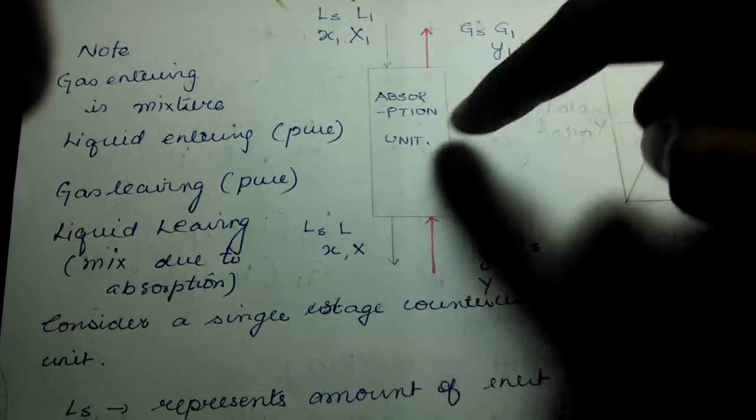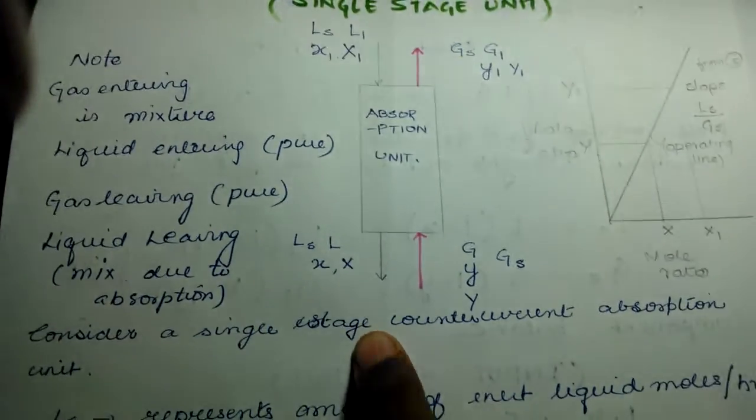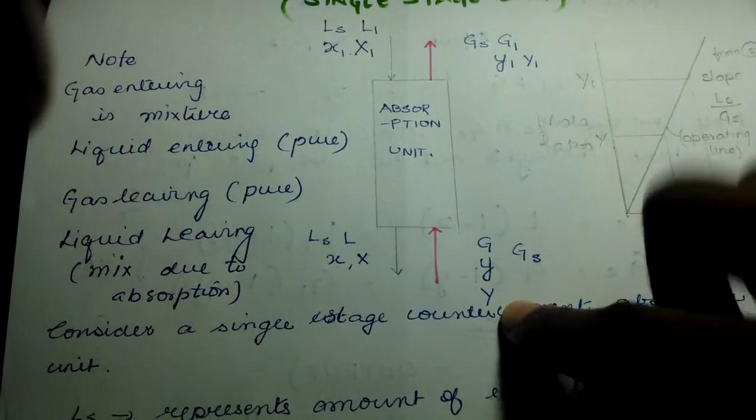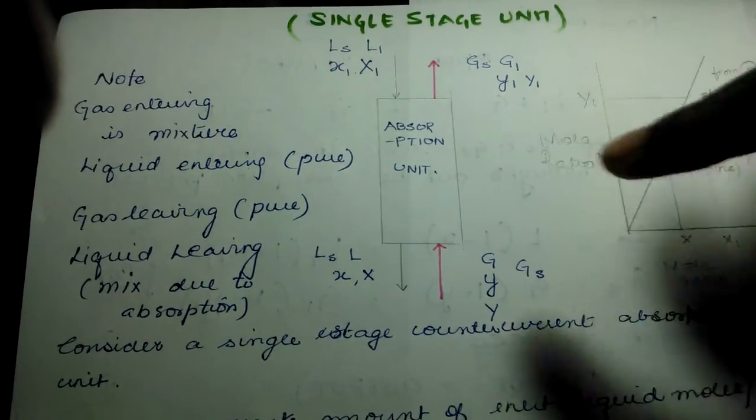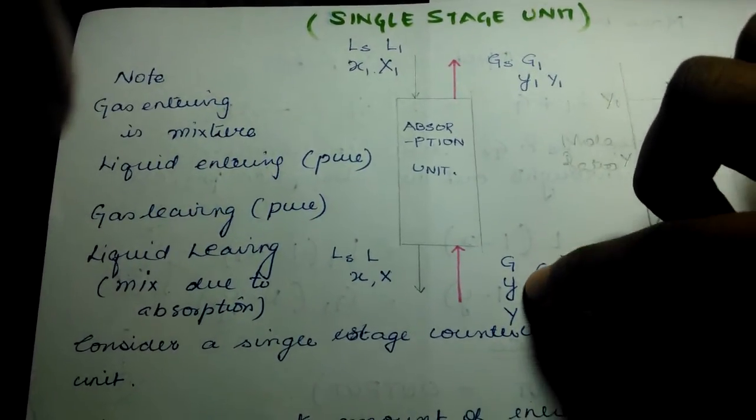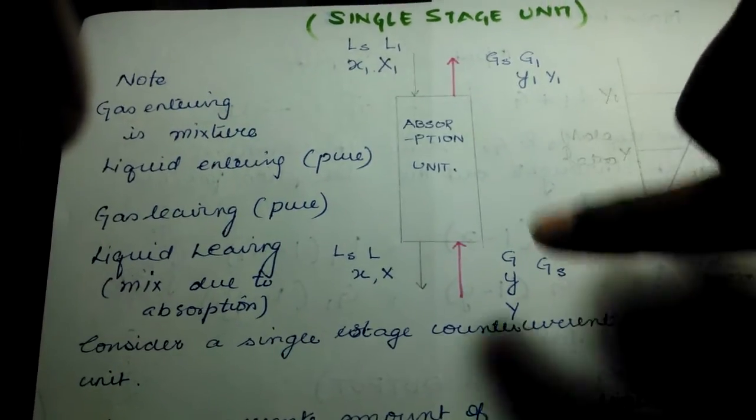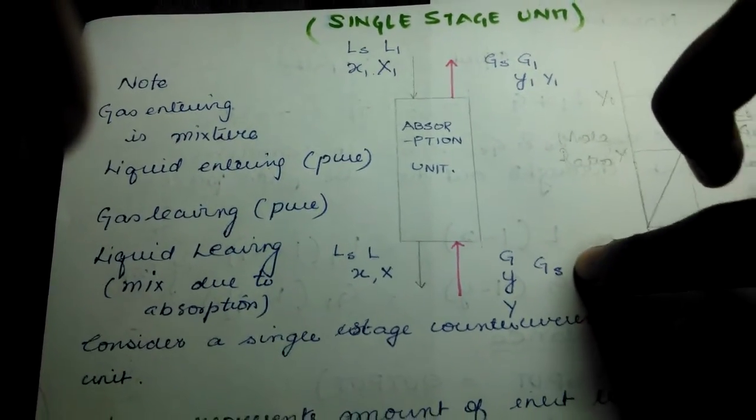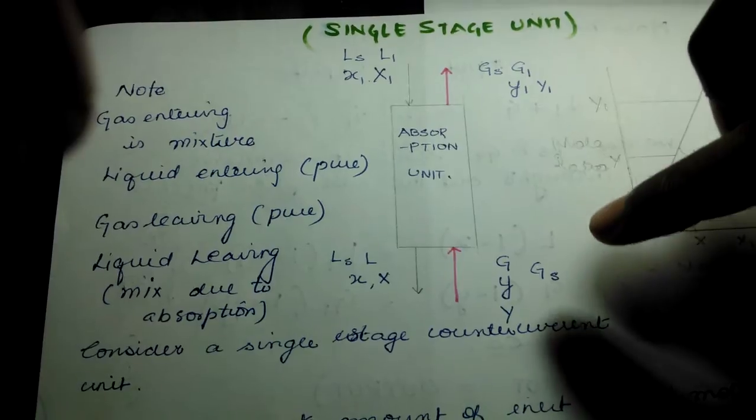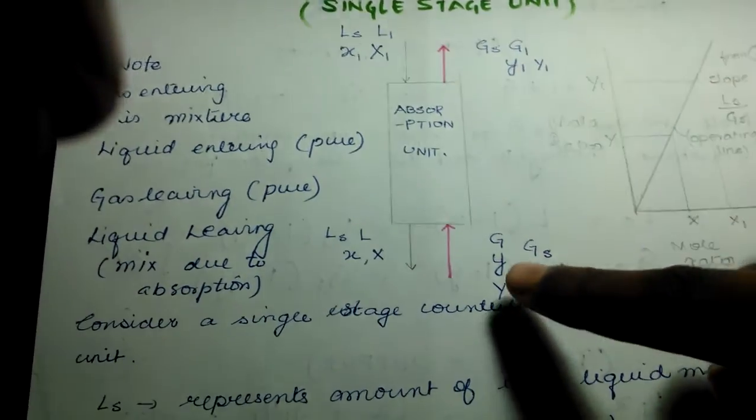In absorption, you have a gaseous mixture like an ammonia mixture with some other gases. You send in water from the opposite side to collect the ammonia from the mixture. The gas coming in is G - that's the whole amount of gas. GS is the part that does not react with the liquid. y is the mole fraction and capital Y is the mole ratio.